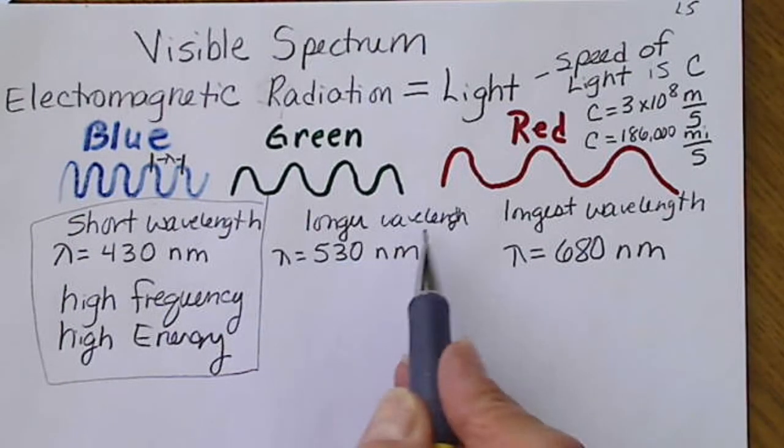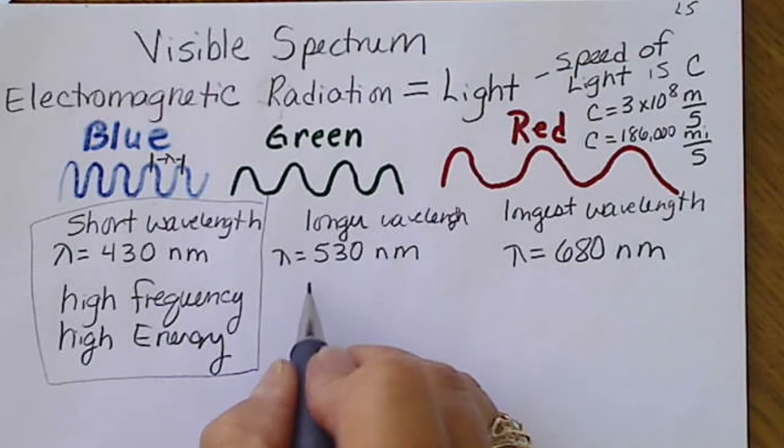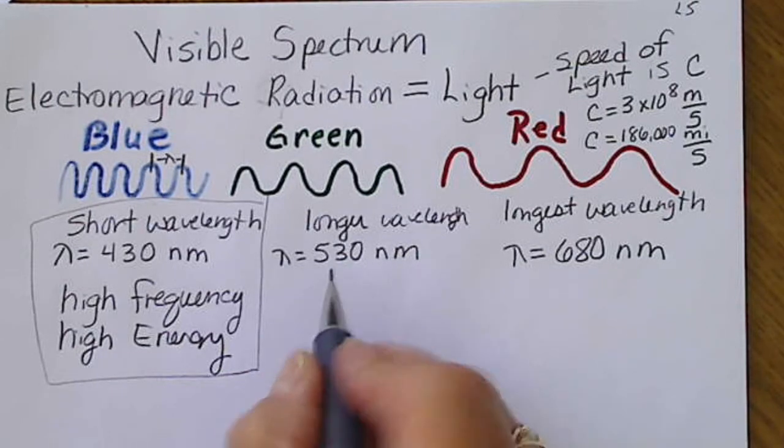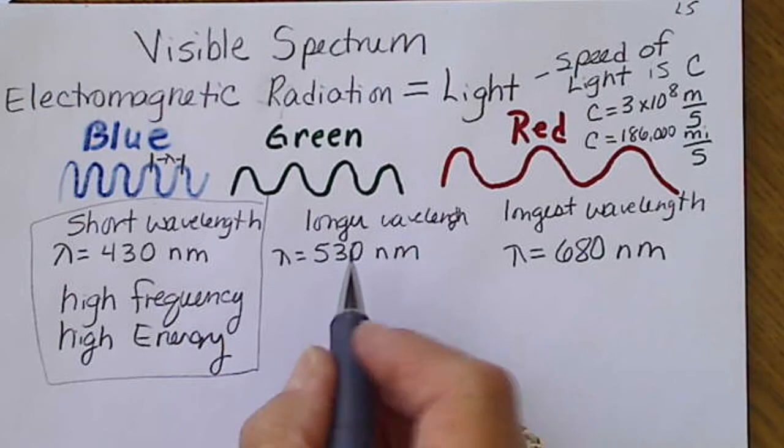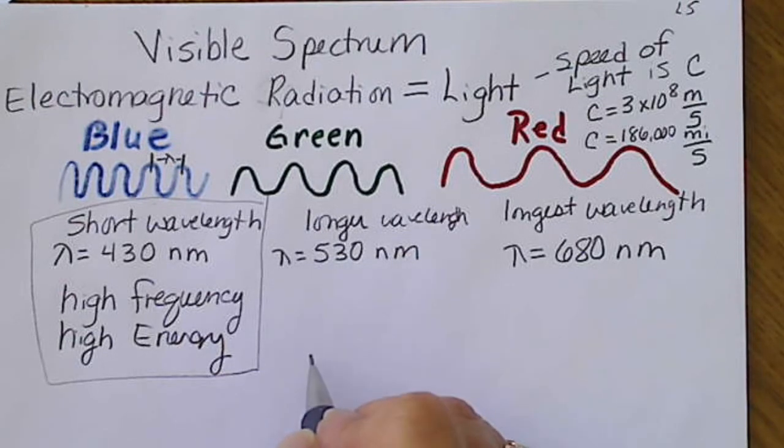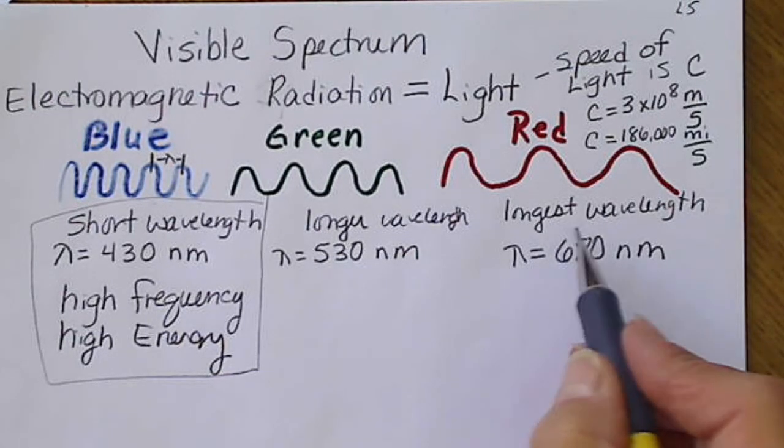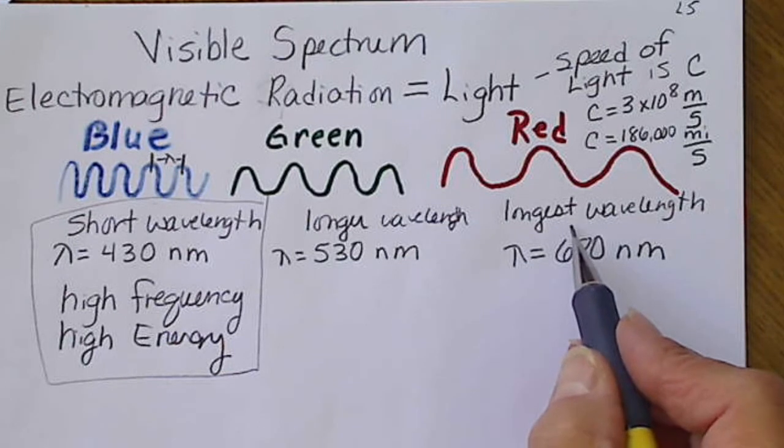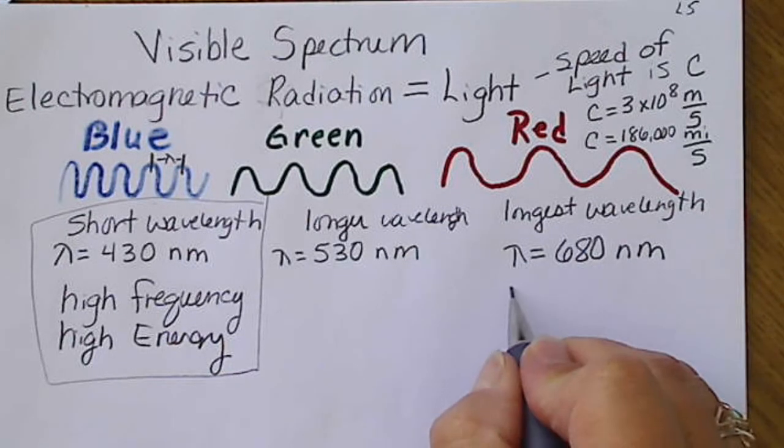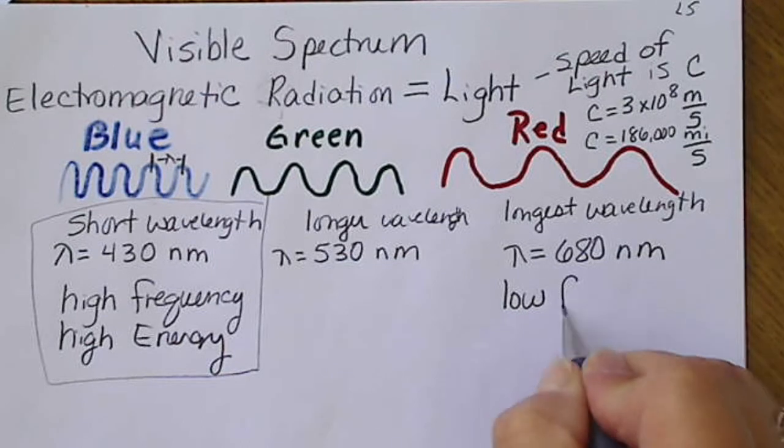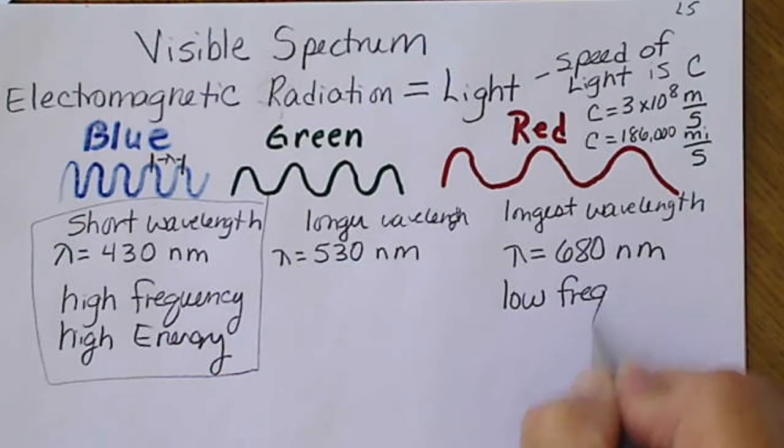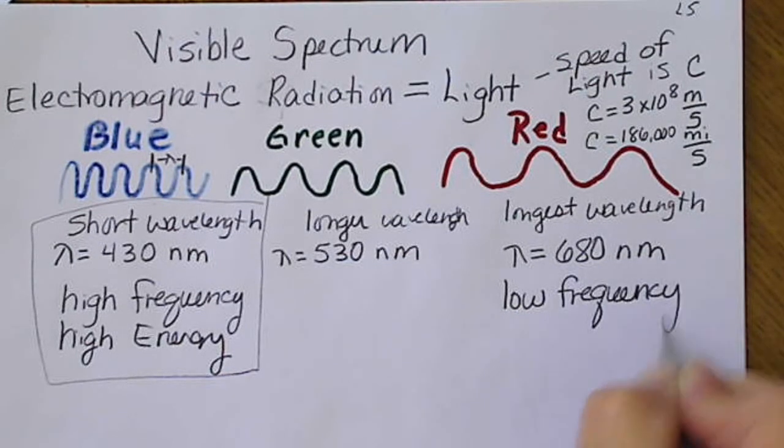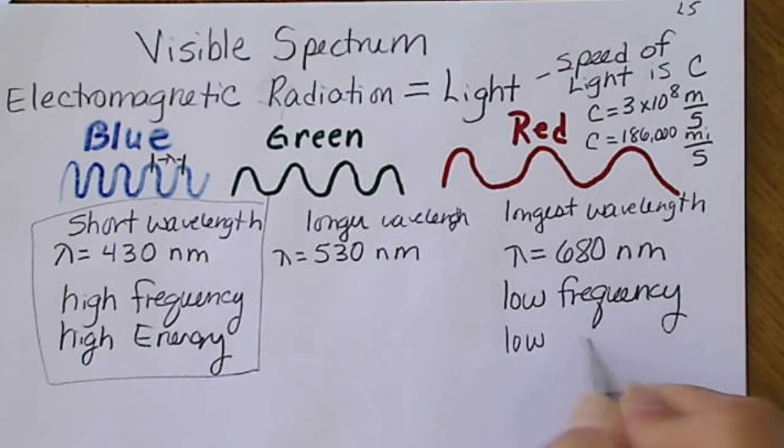A longer wavelength has a lower frequency and lower energy. The longest wavelength has a low frequency and also a low energy.